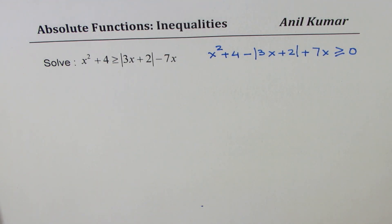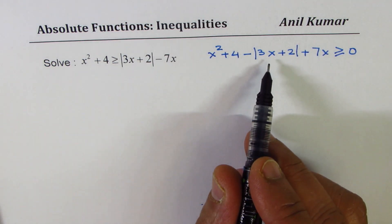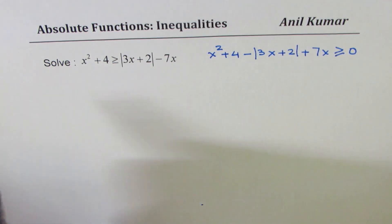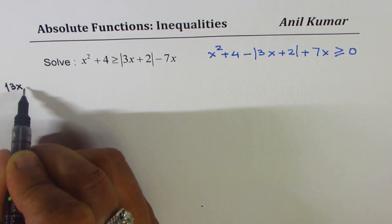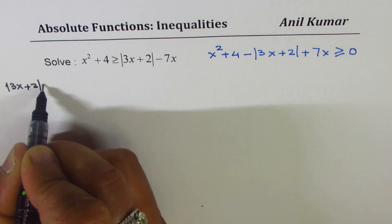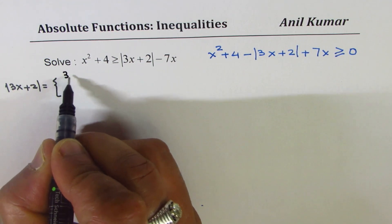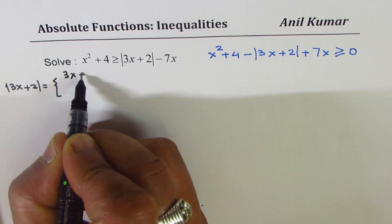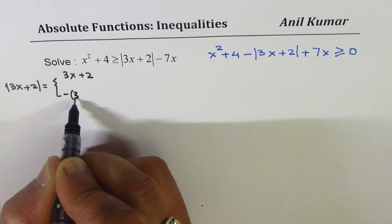The second step is to rewrite the absolute function — that is kind of a rule. Whenever you are given absolute functions, always rewrite them. We know the absolute value of 3x + 2 could be equal to either positive (3x + 2) or negative (3x + 2).